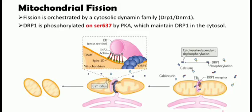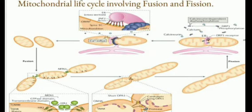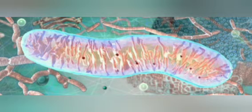This actin filament accumulation can drive initial mitochondrial constriction that supports subsequent DRP1 polymerization and leads to mitochondrial fission. Mitochondrial fission also contributes to quality control by enabling the removal of damaged mitochondria and can facilitate apoptosis during stress. Thus, mitochondrial membrane dynamics is essential for human health.